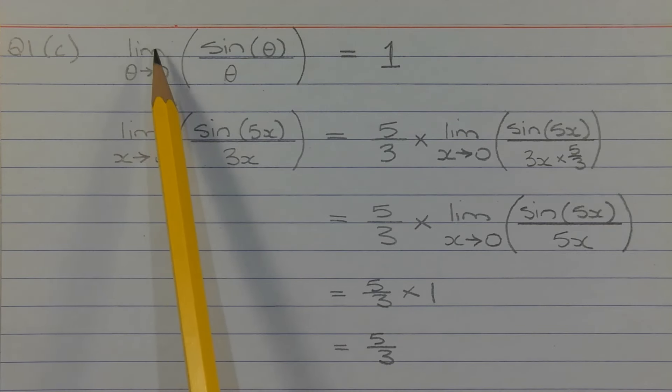Recall that the limit as theta approaches 0 of sine theta over theta is equal to 1. So the angle and the denominator have to match.